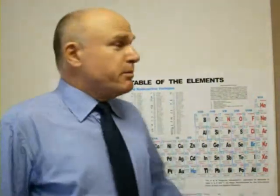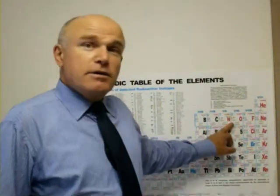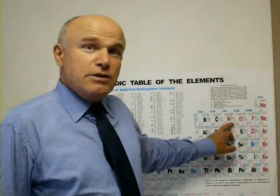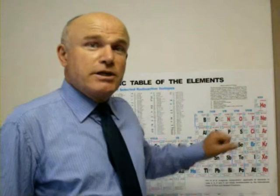This reaction is oxygen plus oxygen equals sulfur. As you can see on the periodic table of the elements, oxygen has an atomic number of 8, so if we add two oxygen atoms together we get sulfur, which has an atomic number of 16.